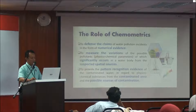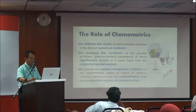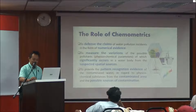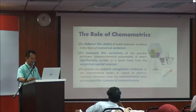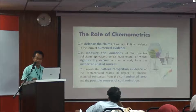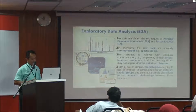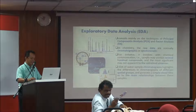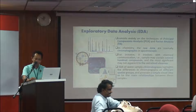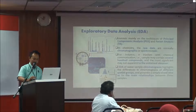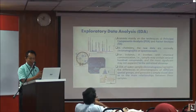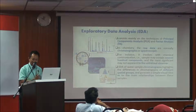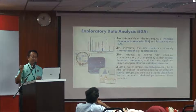This is to measure the variation of possible pollutants — physical and chemical — which significantly occur in the water body from suspected spatial sources, and to provide pattern recognition evidence of the contaminated water regarding physical and chemical substances from the contaminated area and possible sources of contamination. Exploratory data analysis consists mainly of principal component and factor analysis. In environmental science, we go to the field, collect samples, measure some parameters in situ, bring others to the laboratory, and finally get data in numerical form.